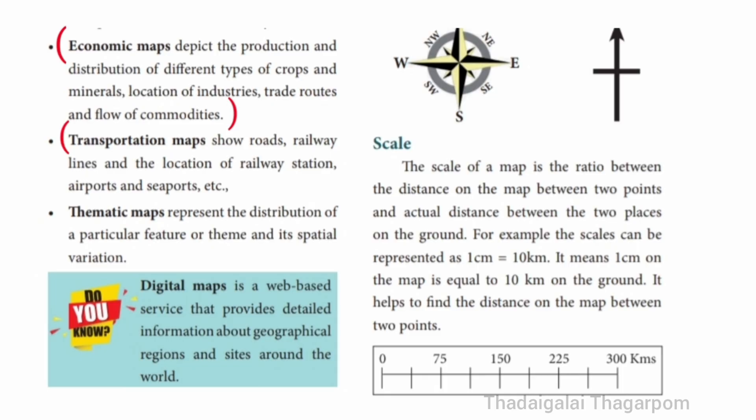Transportation maps show roads, railway lines and the location of railway stations, airports and seaports. Thematic maps represent the distribution of a particular feature or theme and its spatial variation.